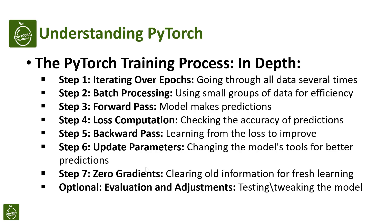Now let's walk through the PyTorch training process — it is a cycle. First, we go through all our data several times, which we call epochs. In each epoch, we don't use all data at once but in small groups or batches. The model then guesses the answer — that's the forward pass.